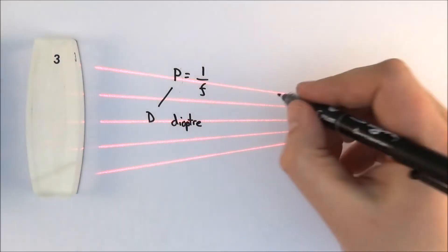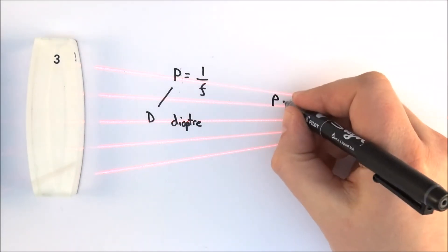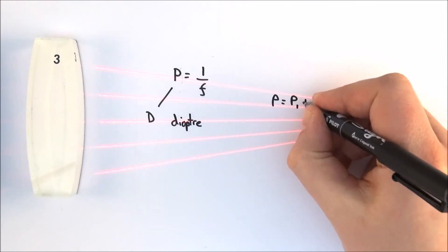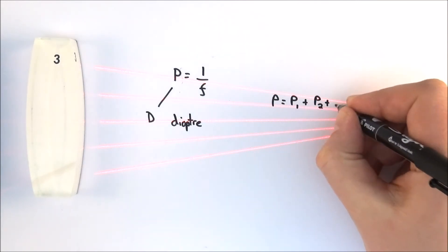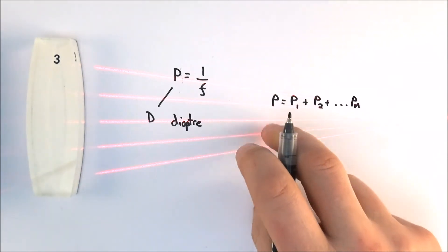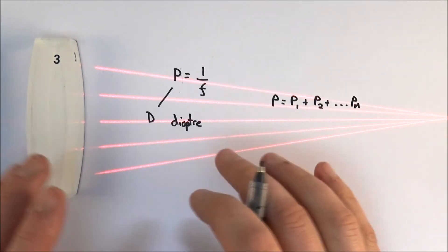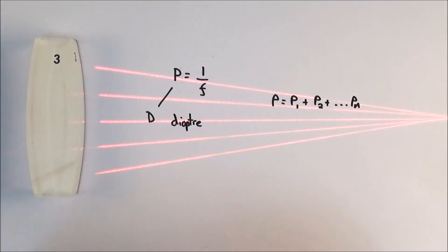If you have many lenses, then effectively the combined power is equal to the power of each of those individual lenses all added together. That basically gives us the total power of the lens. Shorter the focal length, more powerful. Pretty straightforward.